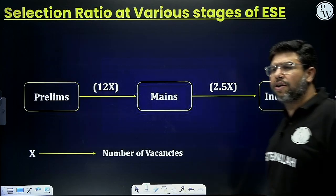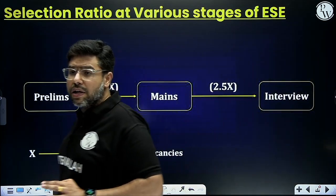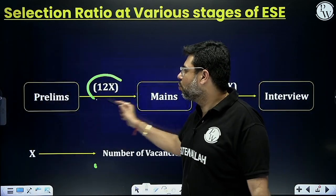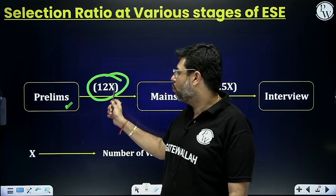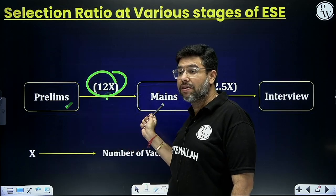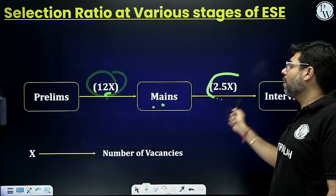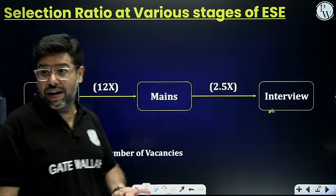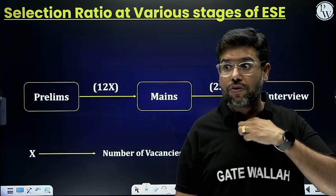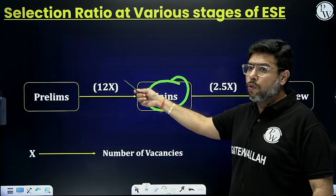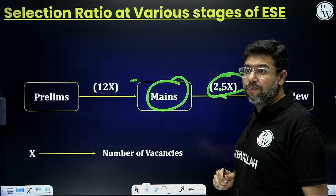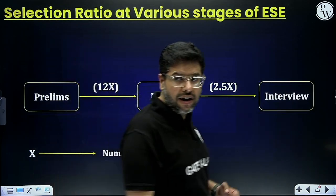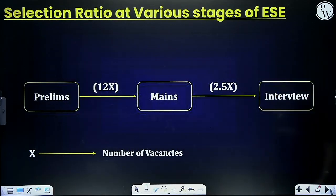Regarding the selection ratio: if X is the number of vacancies for any branch, then around 12X students are selected in the prelim stage to give mains. After mains, around 2.5X students are selected for interview, and after interview only X students get the vacancies. So clearing prelims does not mean you will clear the exam — mains is also very critical. Out of 12X, only 2.5X will qualify mains, so if you are not writing mains properly your chances of selection become very low.